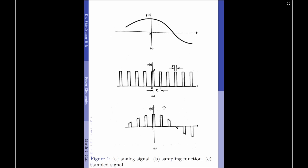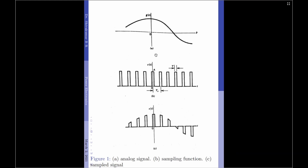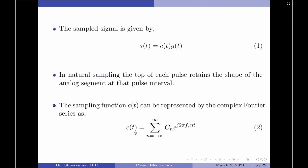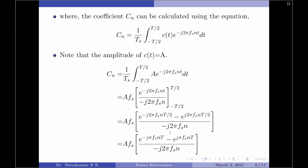Now, to continue the mathematical analysis of natural sampling, let us define C(t) as a mathematical expression. This can be done by using the complex Fourier series as: C(t) = summation n from minus infinity to plus infinity of C_n multiplied by e to the power of j·2π·f_s·n·t, where the coefficient C_n can be calculated using: C_n = (1/T_s) × integral from −T/2 to +T/2 of C(t) × e to the power of −j·2π·f_s·n·t dt.